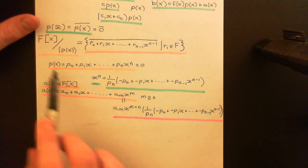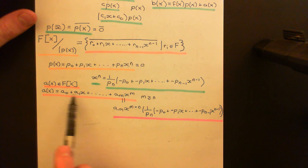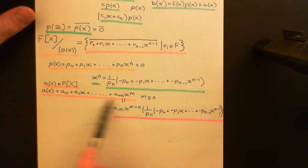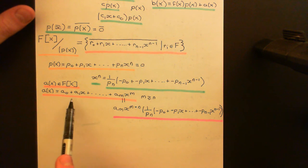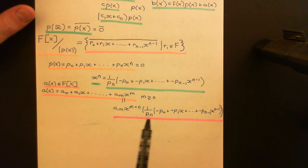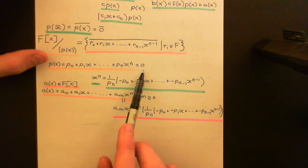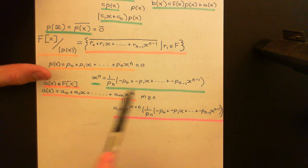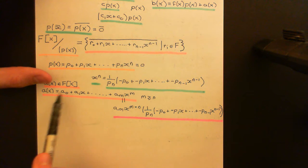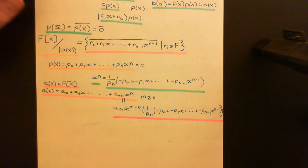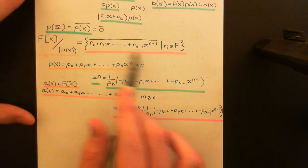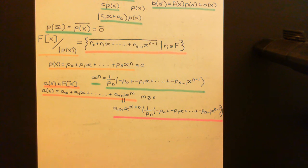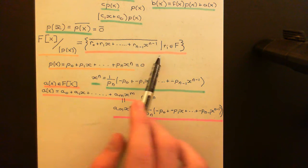That is a perfectly valid manoeuvre in the context of this quotienting. You will reduce the polynomial into some other polynomial that it is equivalent to — it will be in the same coset. So that is why you can always reduce any polynomial down to one of degree strictly less than N. The instant that X to the N equals that lower-degree expression, you can manipulate any polynomial into an equivalent one of degree less than N when you quotient out by the principal ideal generated by P of X.